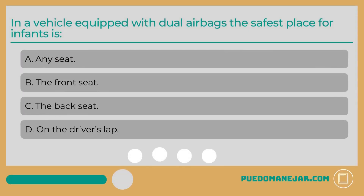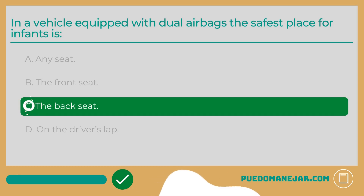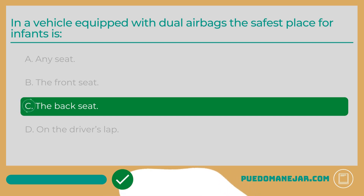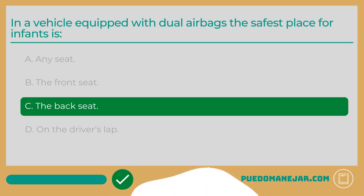In a vehicle equipped with dual airbags, the safest place for infants is: A. Any seat. B. The front seat. C. The back seat. D. On the driver's lap. The answer is C, the back seat. While airbags help keep adults safe in a crash, they can present a serious safety risk for small children. All small children, infants, and babies should be seated in the back seat in an appropriate car seat or booster seat, properly sized for their weight and height and securely latched to the car.